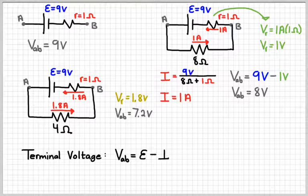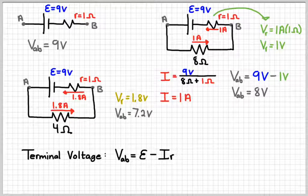In general, we can write an equation for the terminal voltage. It's simply the voltage of the battery with nothing attached to it, so that's the E symbol, the EMF, minus the voltage across that little internal resistor.